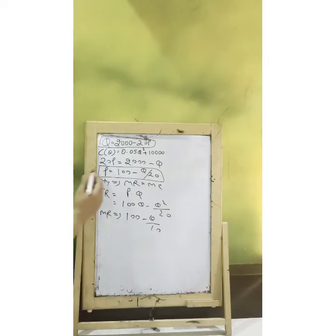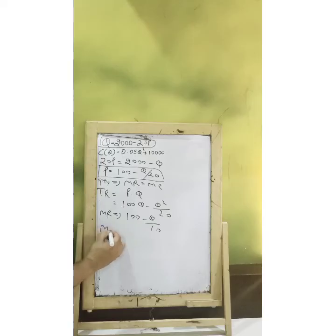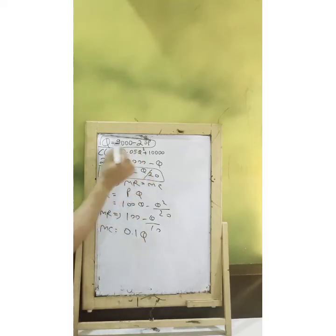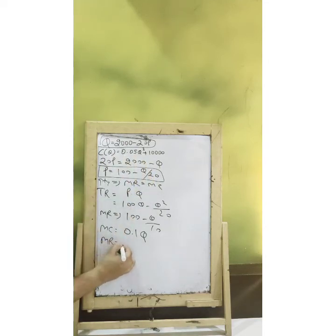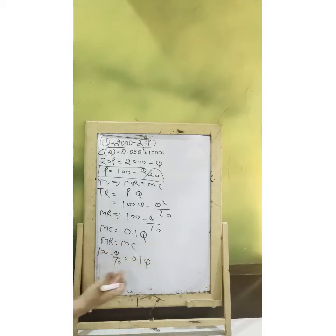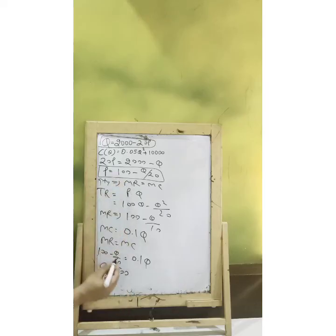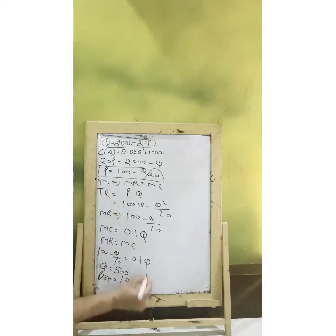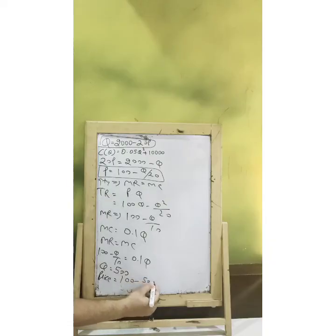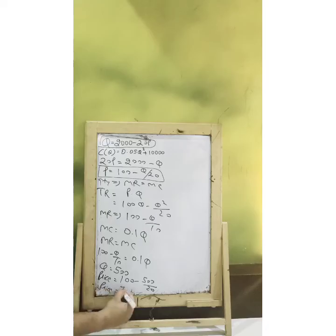Now what about MC? We will differentiate this total cost function with respect to quantity to get MC. If you see, MC in this case should be this. By differentiating the whole of that with respect to Q, you will be getting this. Now MR equals MC: 100 minus Q by 10 is equal to 0.1Q. Once you solve it, you will be able to get your quantity as 500. With the price function as 100 minus Q by 20, which will be 500 upon 20, our price in this case should be 75.